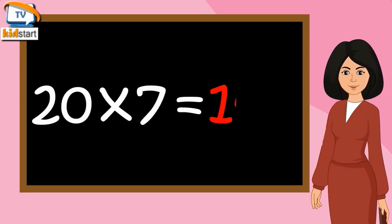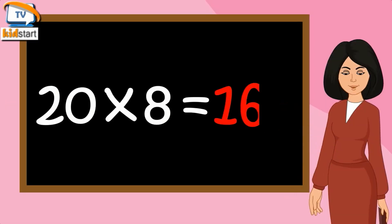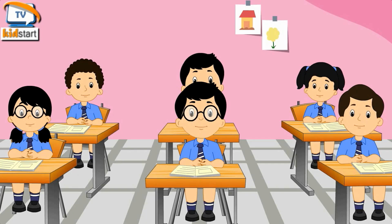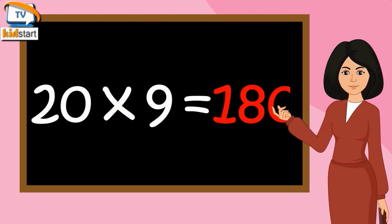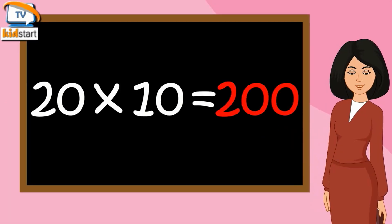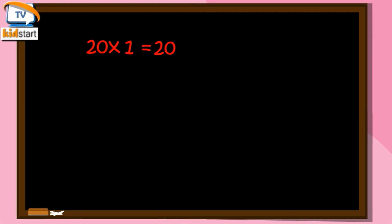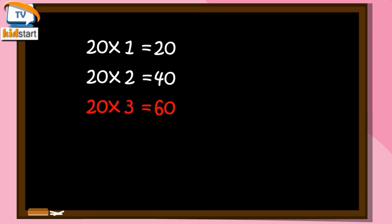20 sevens are 140. 20 eights are 160. 20 nines are 180. 20 tens are 200.